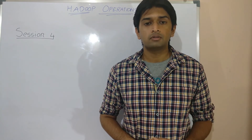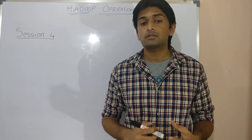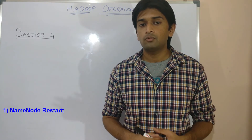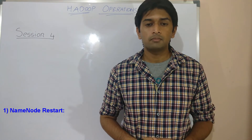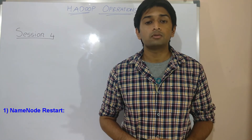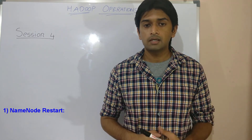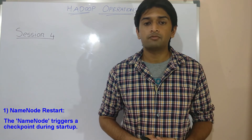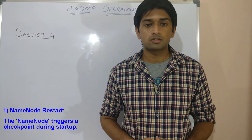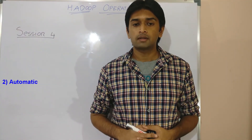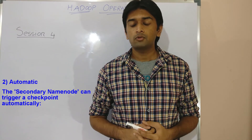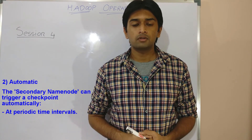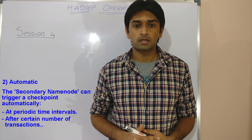A checkpoint can be triggered in three ways. The first is during a name node restart — before the name node loads the FS image to its memory it triggers a checkpoint to merge all the edit files from the last checkpoint. The second is automatic: the secondary name node can trigger a checkpoint automatically after a given time interval or after a certain number of transactions.